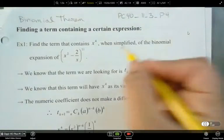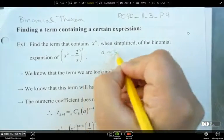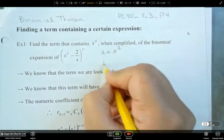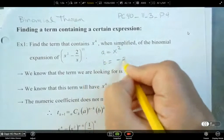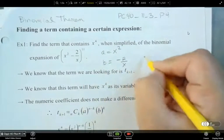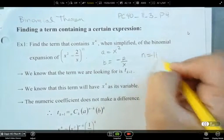So first, it's a good idea to write that we have a as being our x squared, b is negative 2 over x, and then our n is 11.